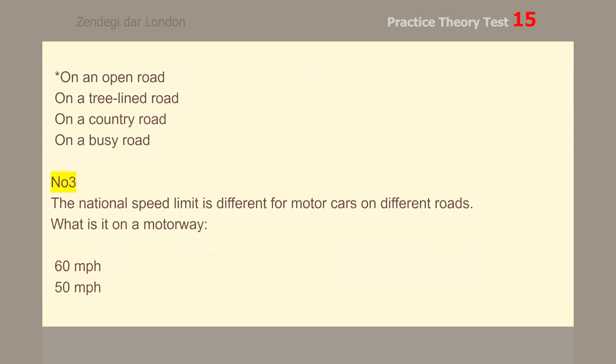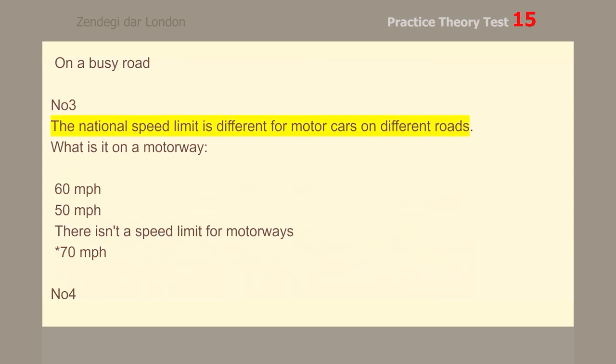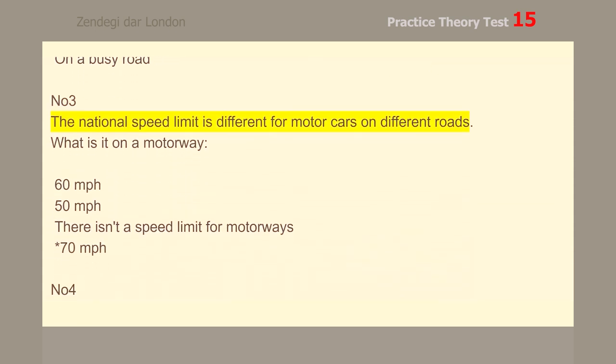Number 3. The national speed limit is different for motor cars on different roads. What is it on a motorway? 70 miles per hour.